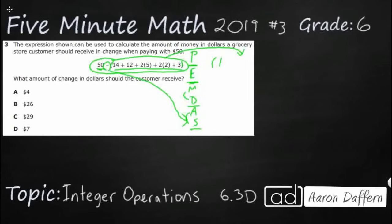So, let's bring this out. We've got 14 plus 12 plus, we've got a 2 parentheses 5, 2 parentheses 2, and then plus 3.